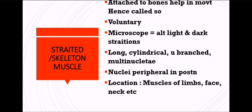Striated or skeletal muscles are attached to the bones — the bones of your hind limbs, forelimbs, or any bone. That is why they are called skeletal muscles, and they are voluntary, meaning they are under your control. Only if you want that muscle to move will you be able to move it. If you want your legs to move, it is under your control; if you want your hands to move, it is under your control. When you see these muscles under the microscope, you will see alternate light and dark striations.